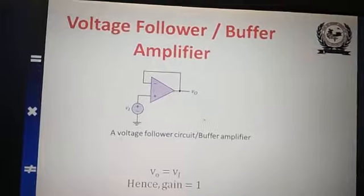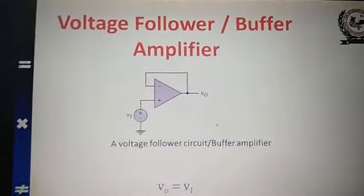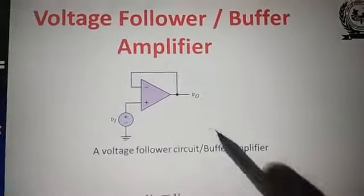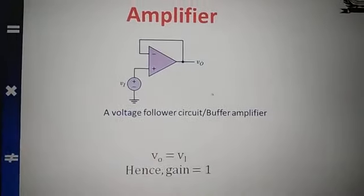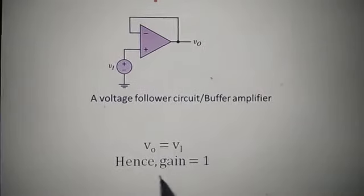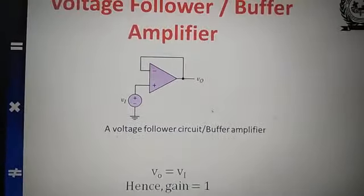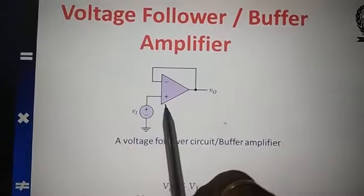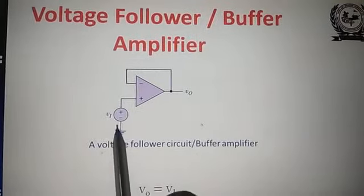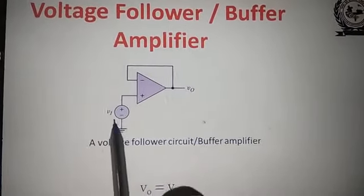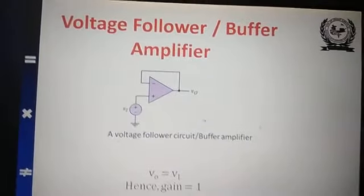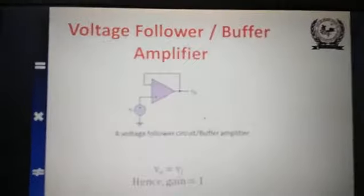This is the voltage follower, also called as buffer amplifier or unity gain amplifier. Here we connect the output directly to the inverting terminal without any resistance, so V0 follows VI, that is V0 is equal to V1, and gain is always equal to 1. Voltage follower is a special case of non-inverting amplifier where Rf = 0, so V0 becomes equal to V1.